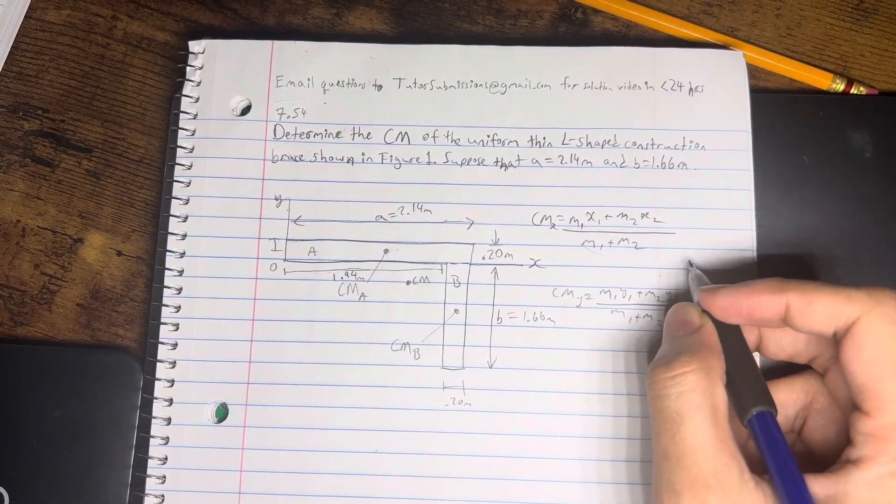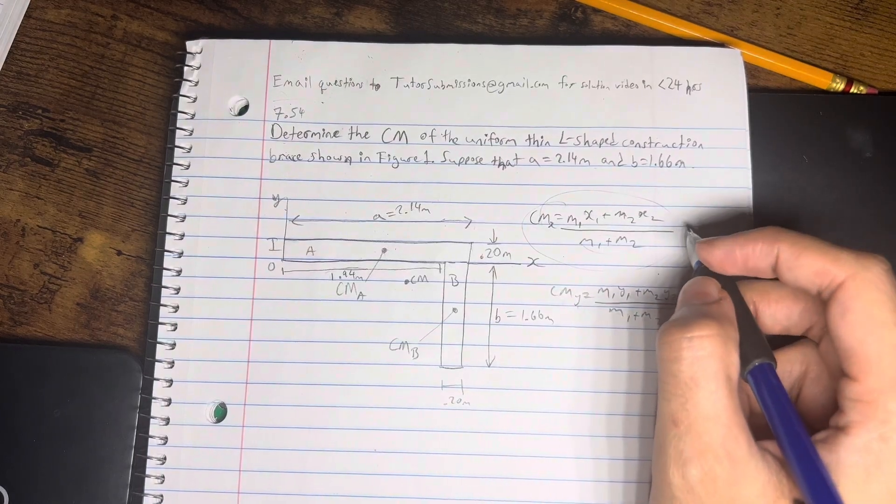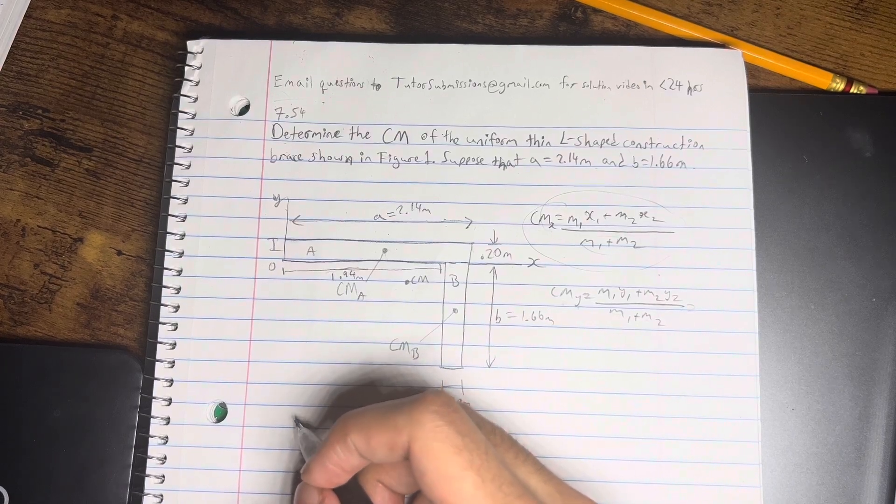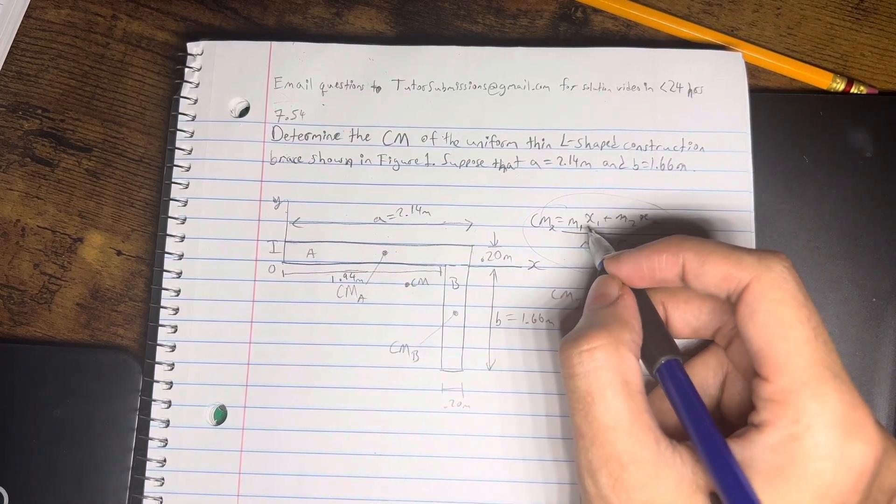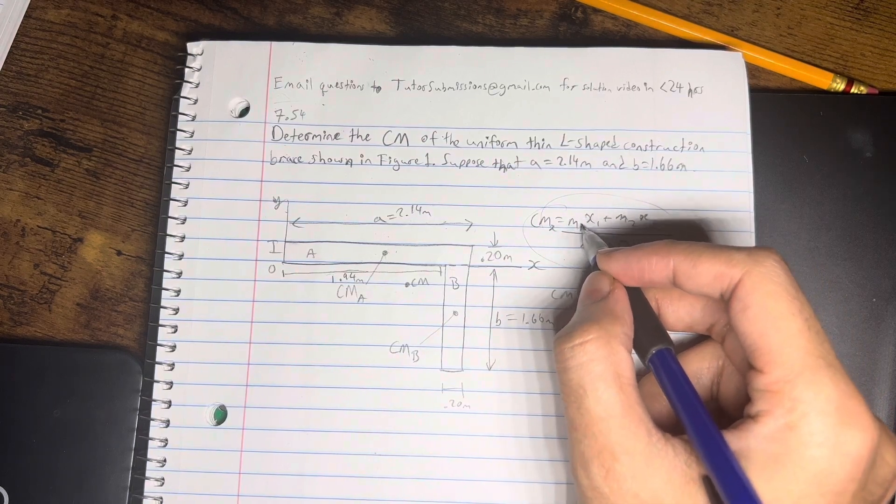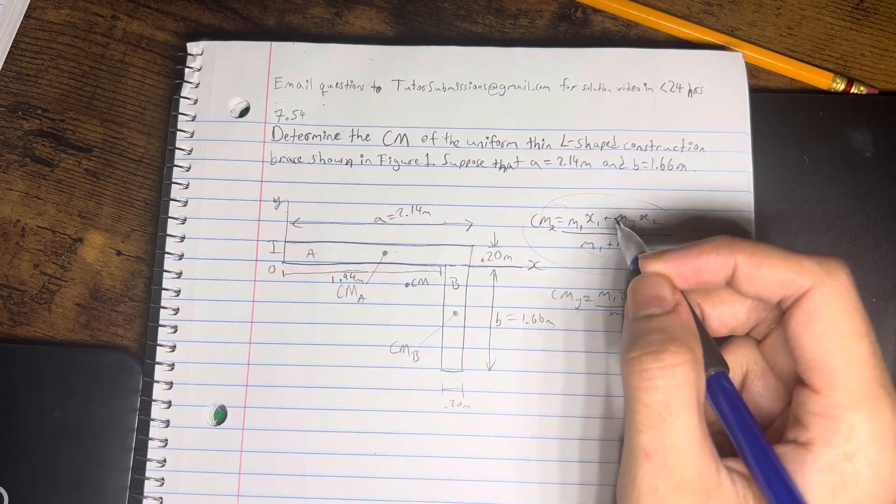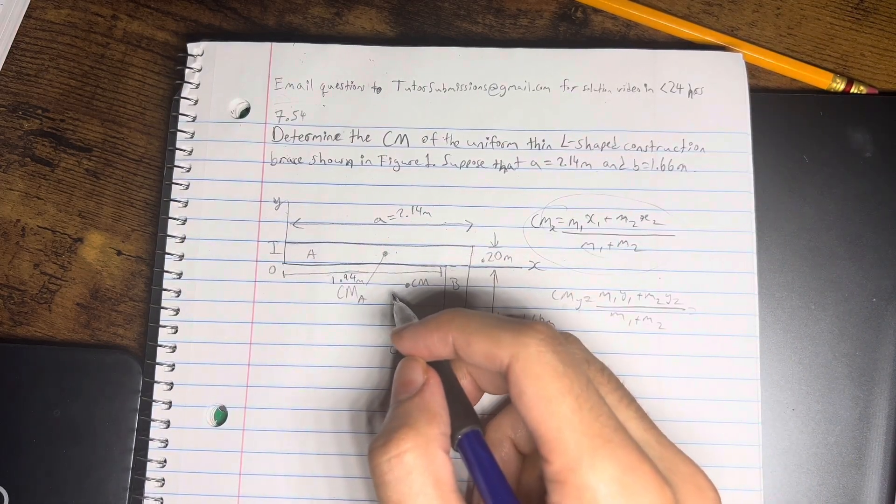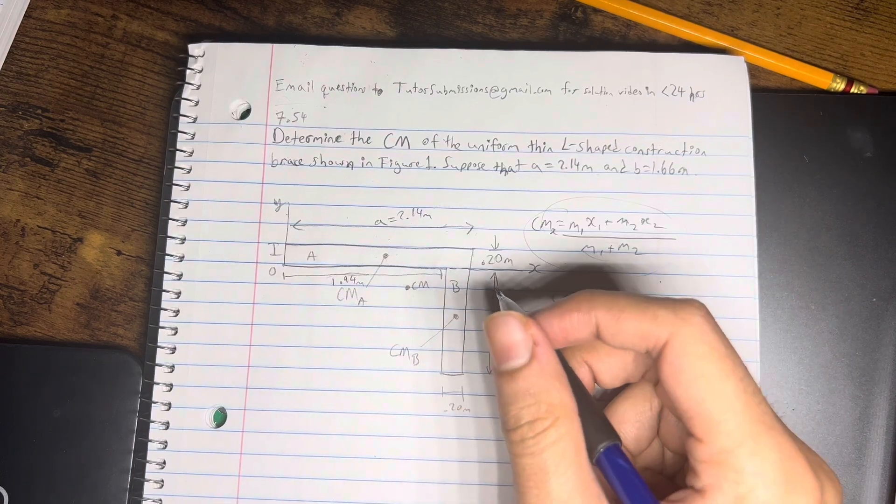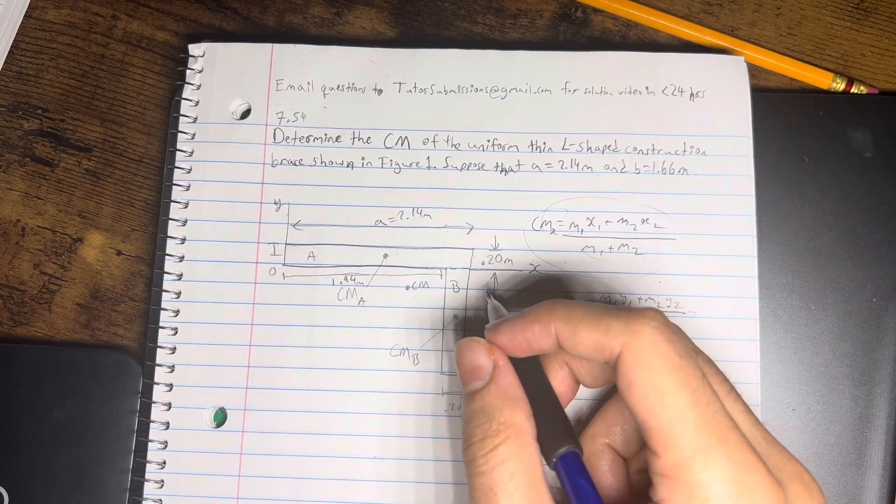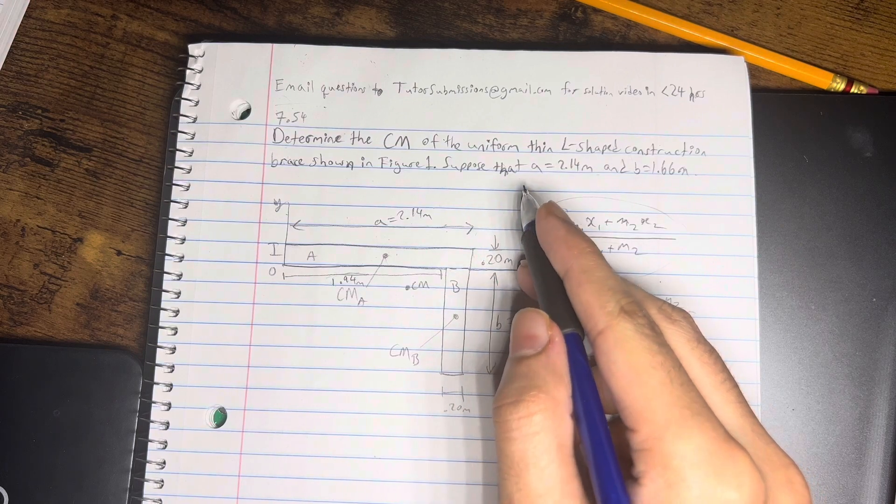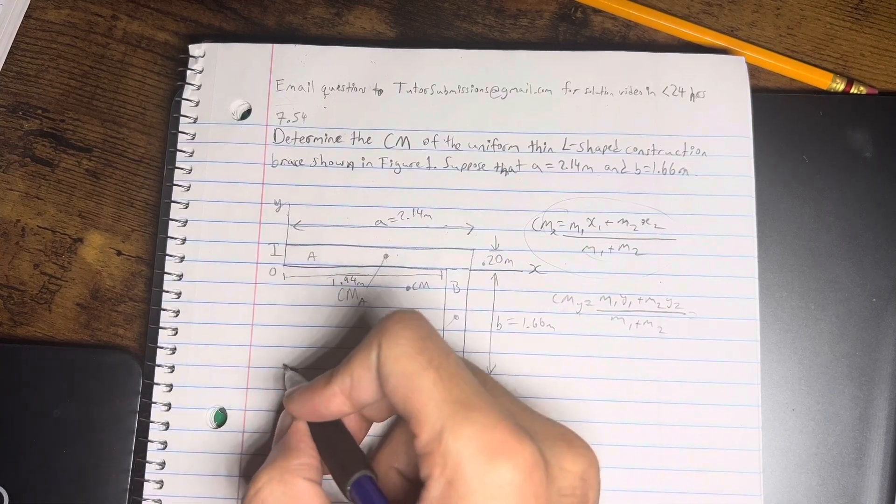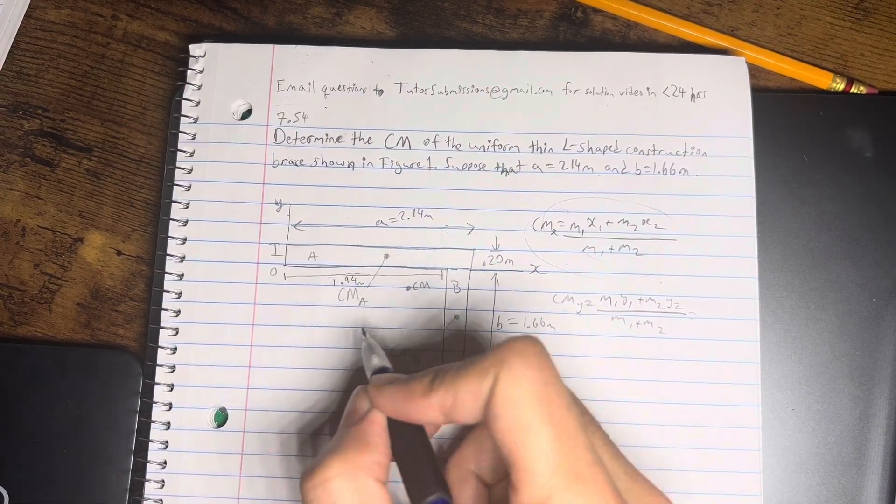Okay, so we're going to start with the x coordinate. So right away, we already have a problem, right? So the equation involves mass, but we're not given any masses in the question, so we're going to have to get a little creative. So what we do have are lengths and widths, so from that we could calculate area, and in this case, because it's a uniform brace, we can assume that mass is going to be directly proportional to area.